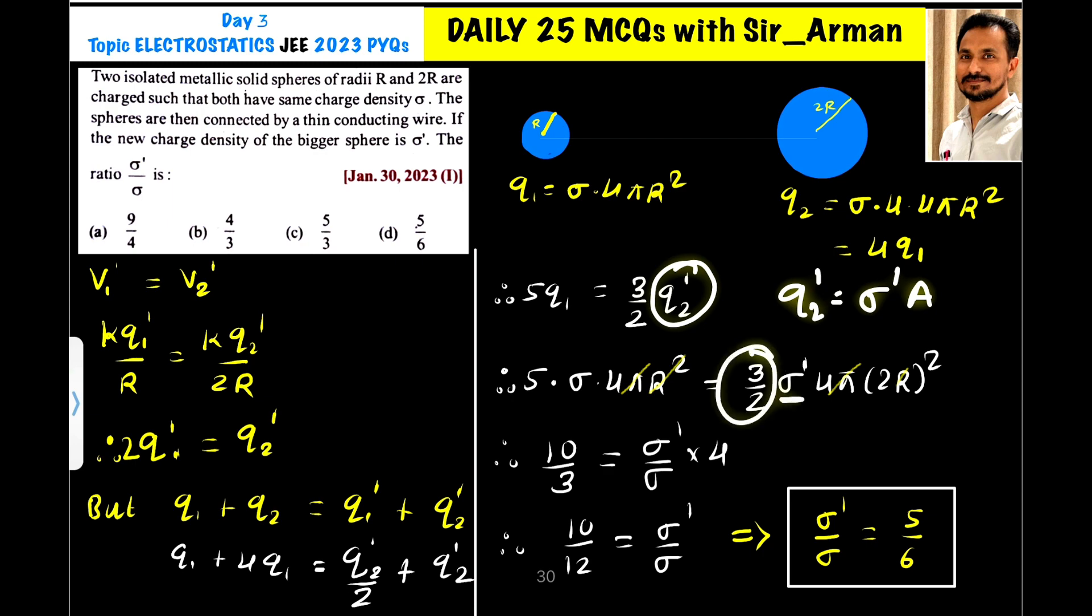So q2 dash equals sigma dash into area. Sigma dash as it is, 3 by 2 as it is, and the area of the bigger sphere is 4π and the radius is 2r, so it is 3 by 2 sigma dash 4π(2r)².